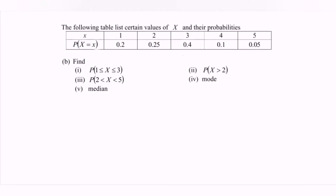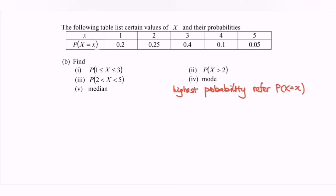For question 4, we find the mode. The mode refers to the value with the highest probability. Based on the table, the highest probability is 0.4, which corresponds to X equals 3. So the mode is equal to 3.